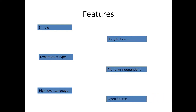The features of Python are: simple, easy to learn, dynamically typed, platform independent, high-level language, and open source. Regarding simplicity — when you read a Python program, it feels like reading an English sentence. It means more clarity, less stress, and understanding the syntax becomes easy. Python uses very few keywords and a very simple structure, so developing programs becomes easy.